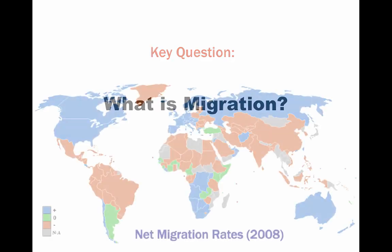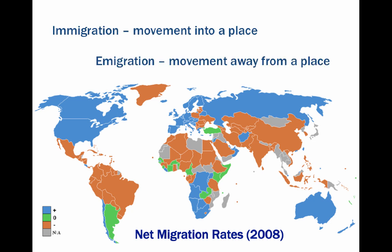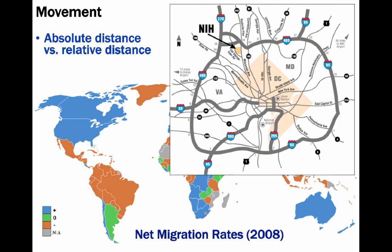We're going to look at migration. You can see with this map where you have net migration rates back in 2008. Net migration is immigration, or those moving into a country, minus emigration, which are those moving out of a country. To understand migration, we first have to look at movement. Let's look at absolute versus relative distance. Absolute is the distance between two points, basically a straight line, or a straight route across a road. Relative distance — the reason why you see a beltway around Washington, D.C. — is when you're measuring distance in terms of cost and time.